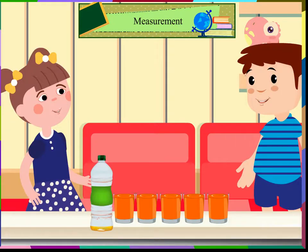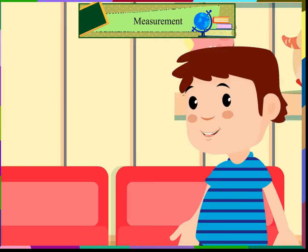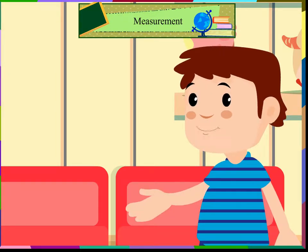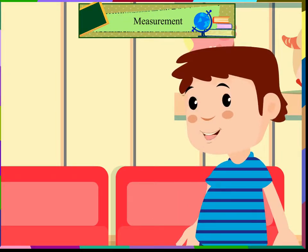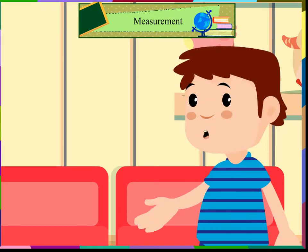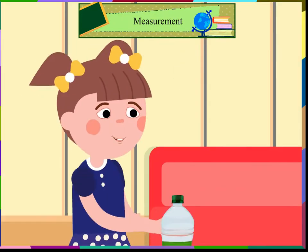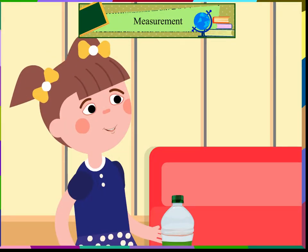What is capacity? Capacity is the quantity of liquid that a container can hold. The capacity of this bottle is 5 glasses. Can you explain more about this? Sure.